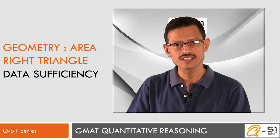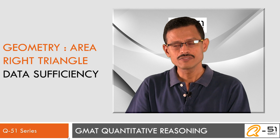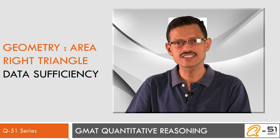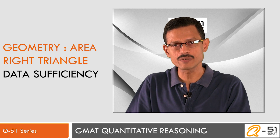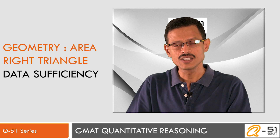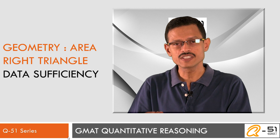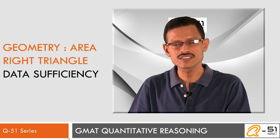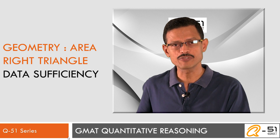This question is a data-sufficiency question — it's a geometry question asking us to compute the area of a right triangle. Whenever you get a question of this kind, what it is actually testing is whether you can determine, from the data given in the two statements, whether you are able to find a unique triangle. If there is more than one triangle that can exist for the given data, there is a very good chance the area is not going to be the same. In any data-sufficiency question we need to get a unique answer. Let's look into the question, the statements, and take it forward.